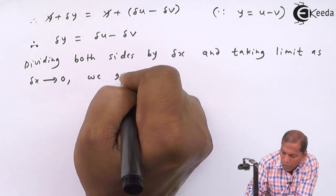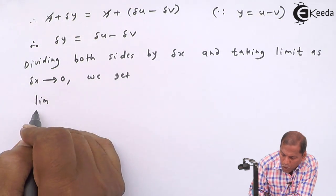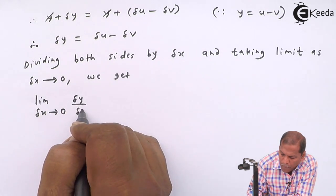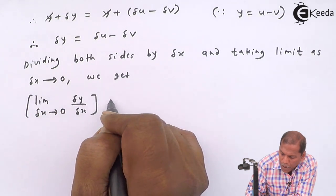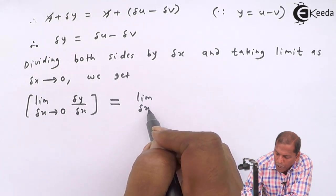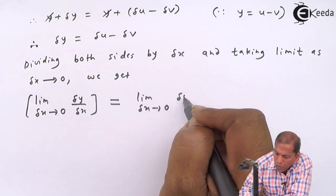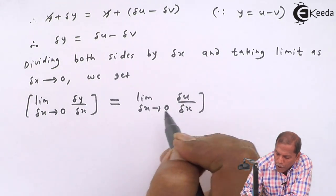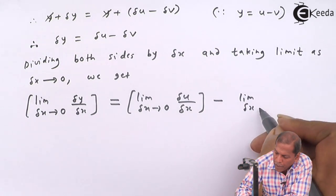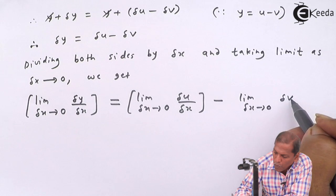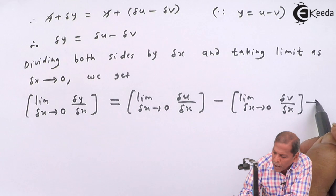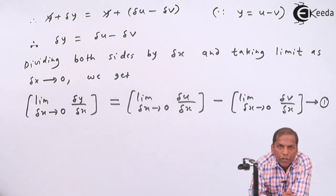We get limit δx tends to 0 of δy/δx equals limit δx tends to 0 of δu/δx minus limit δx tends to 0 of δv/δx. Now let us denote this as equation 1.